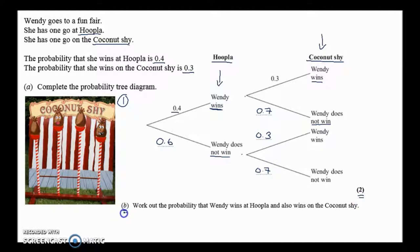Part B says work out the probability that Wendy wins at hoopla and also wins at the coconut shy. Well, let's start at the beginning. So we turn up at the fair, we start here, and we're going to win. This is this kind of chain of events. We're going to win on the coconut shy, and then we're going to go on to win. So hoopla first, win at hoopla,